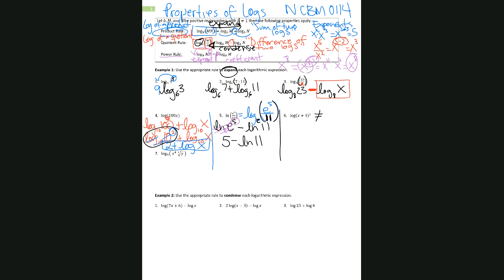For the next expression, please do not be confused into thinking you could split it into log of x plus log of 4. The reason you cannot is because you do not have the log of a product — you actually have the log of an addition of two numbers, so that would be totally wrong. The only thing we can do here is use the power property to bring the exponent to the front as the coefficient of the logarithmic expression. That's all we can do with that one.